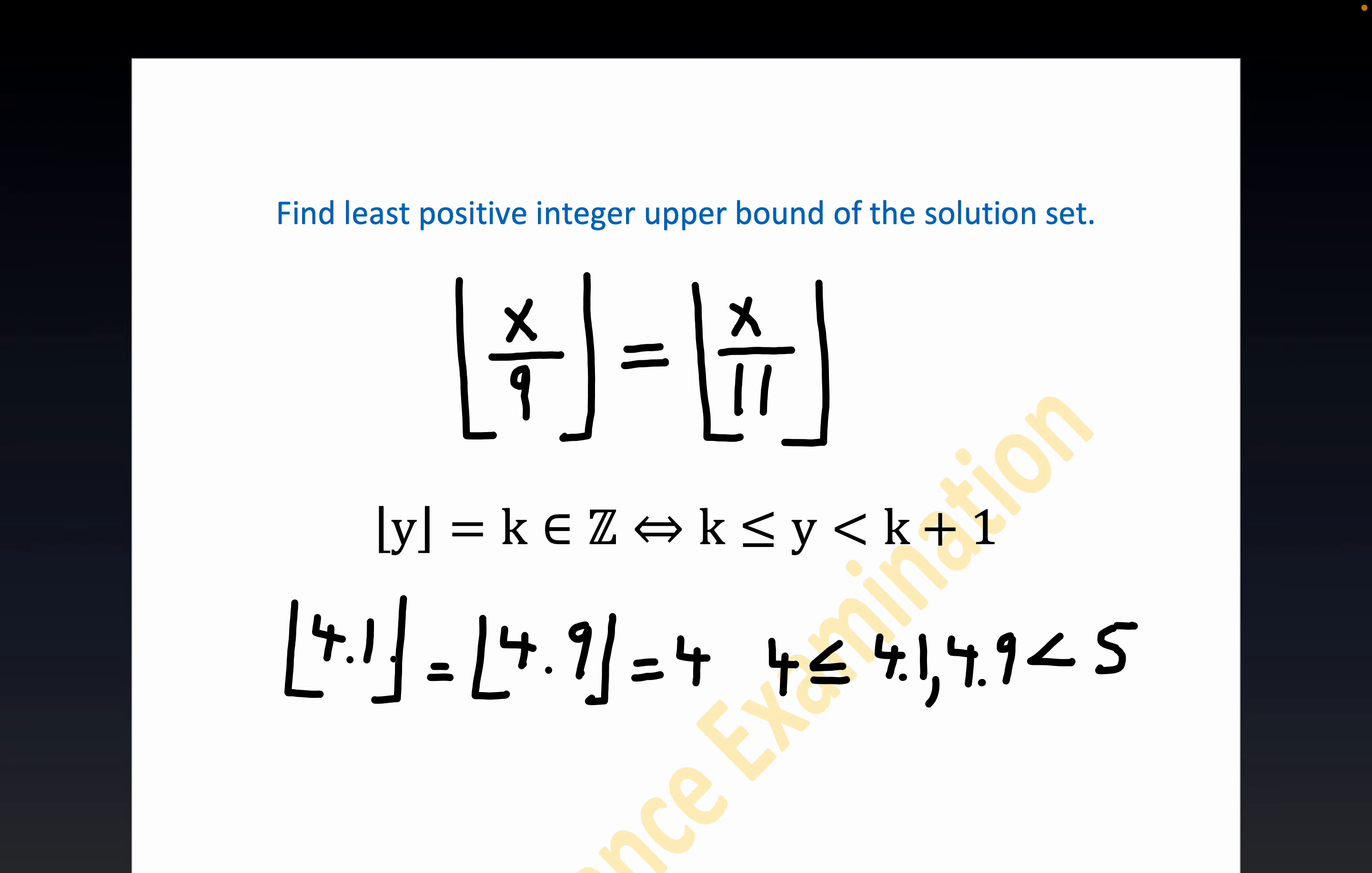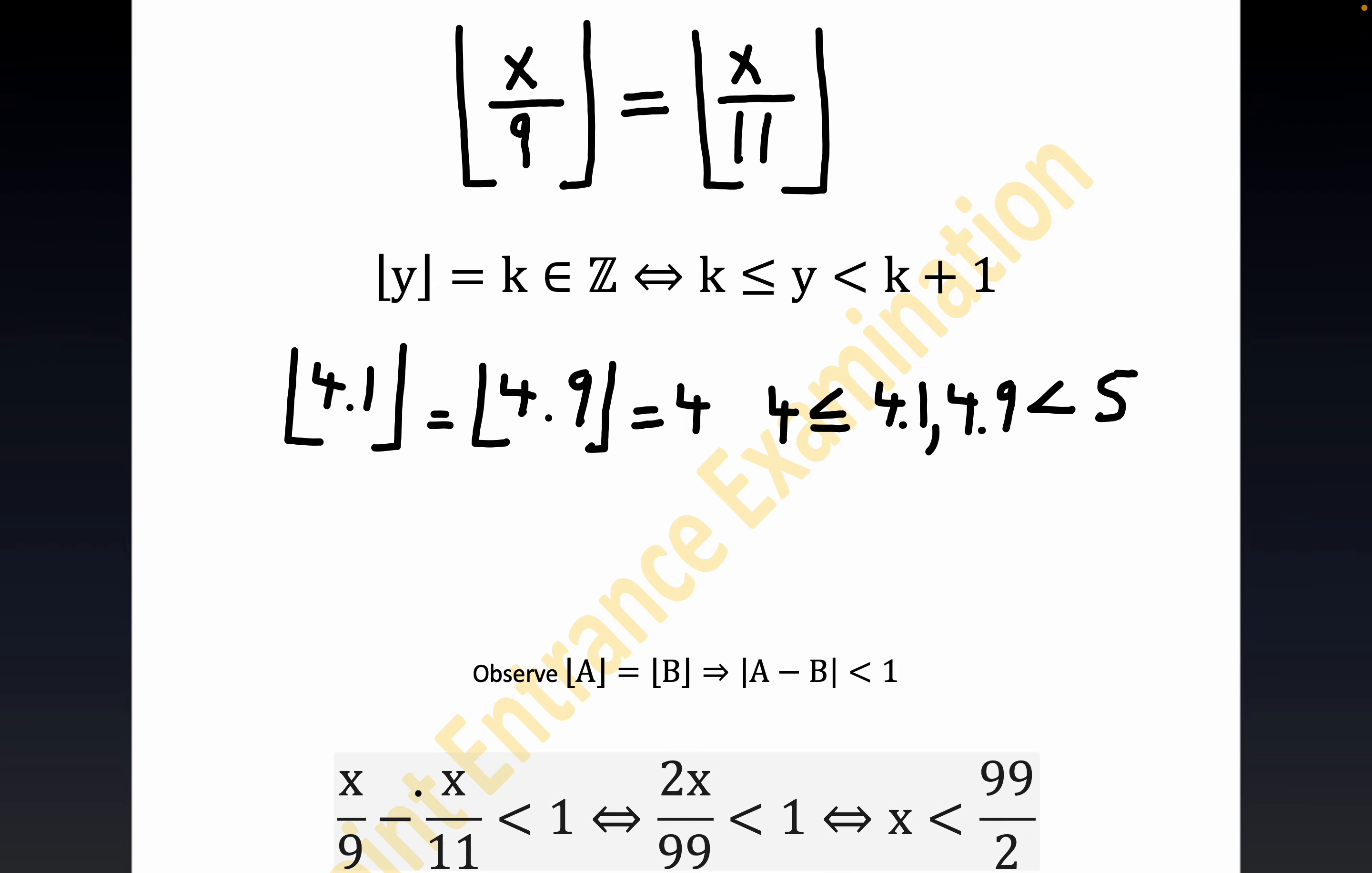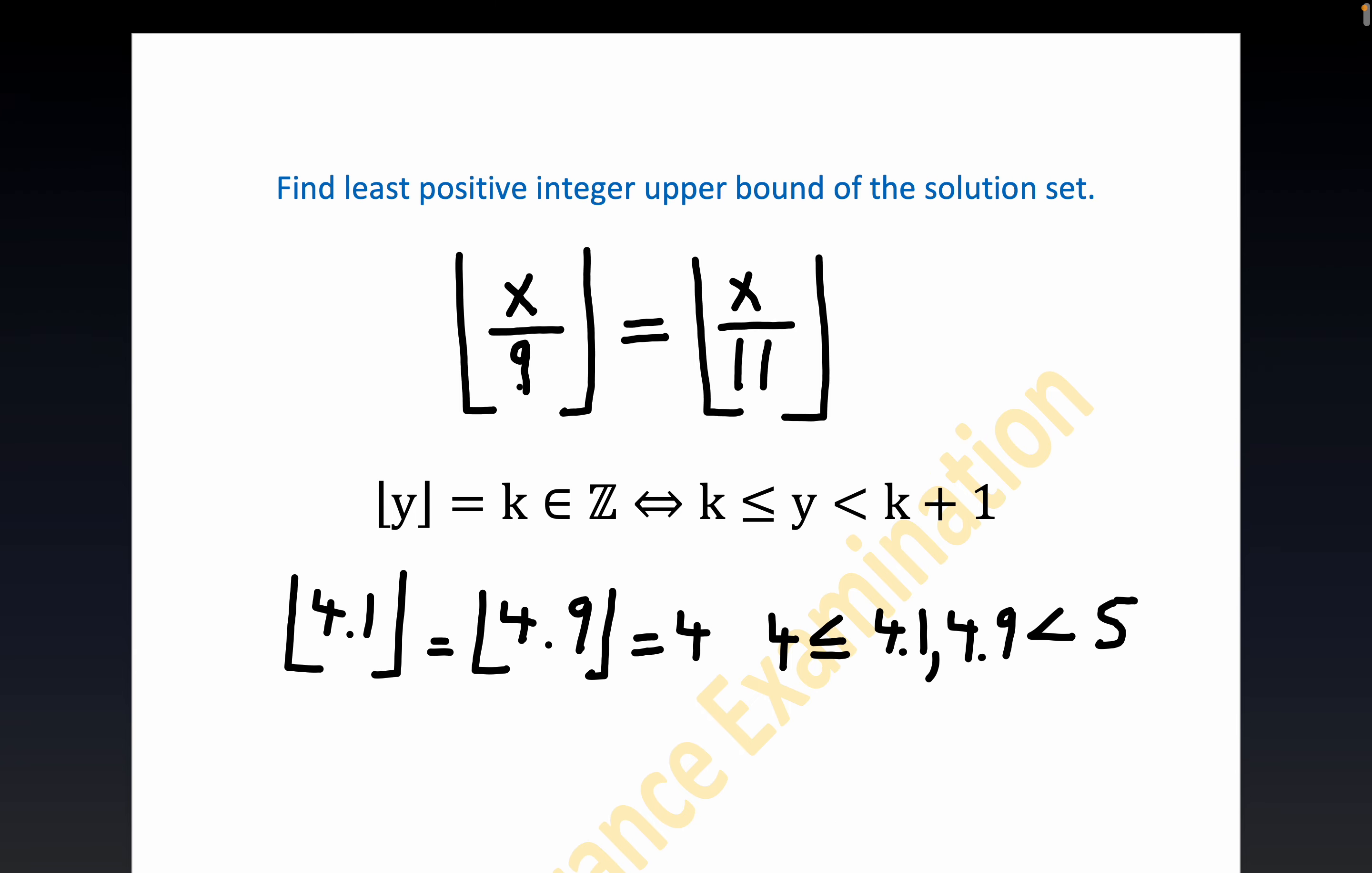So again, notice how that completely lines up with the definition. Basically these two numbers are stuck in an interval that has a length of one. That leads to this observation: the floor of two values is equal if and only if the difference of those two values is less than one. Now I put absolute value here; we are looking for positive integer solutions so we don't really have to worry too much about the absolute value bars.